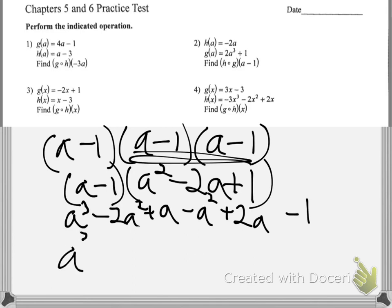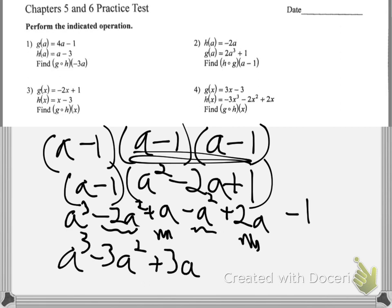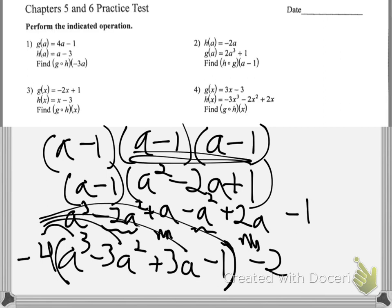Combining like terms: a cubed shows up once, then minus 2a squared and minus another a squared is minus 3a squared, then plus a and plus 2a is plus 3a, then minus 1. We have all of that, and remember it's times negative 4, then minus 2. Distribute the negative 4 to all of those, combine like terms with the minus 2, and you're done.